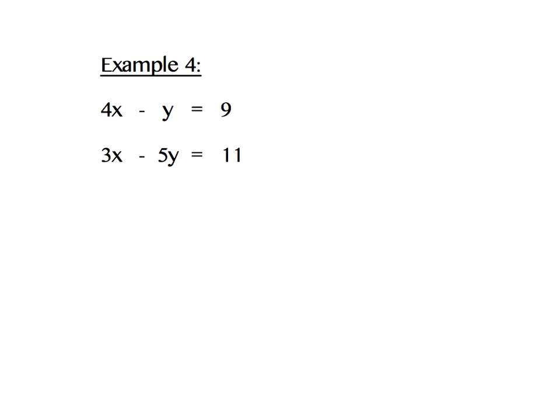Go ahead and write down our last example for today. And I can see step 1 has been done for us. Our equations are lined up in columns. But we do not have step 2 done. We do not have opposites in one of the columns of variables.